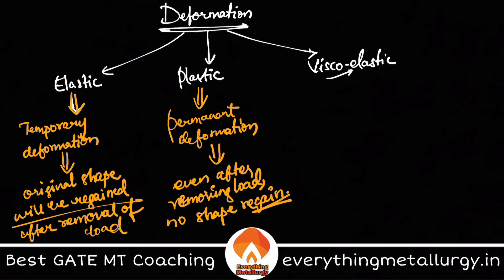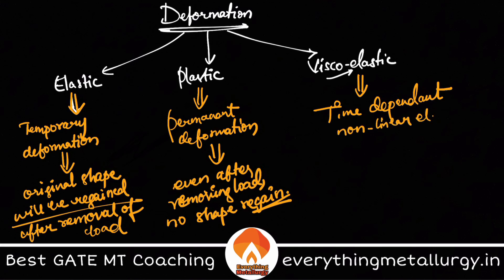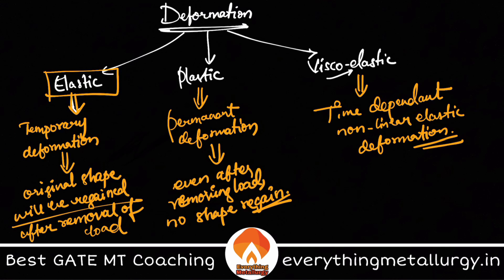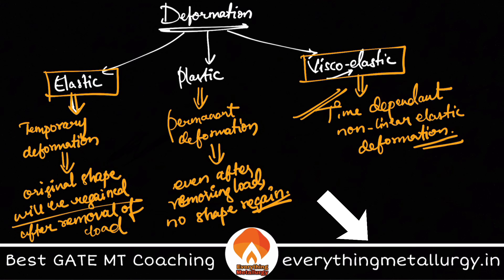Viscoelasticity is time-dependent deformation. It is usually non-linear elastic deformation. The difference between elastic and viscoelastic deformation is that in elastic deformation the original shape is regained instantaneously once the load is removed, whereas in viscoelasticity it is not the case — the material slowly returns to its original position. Some time is needed; the strain is recovered with time, but not instantaneously.